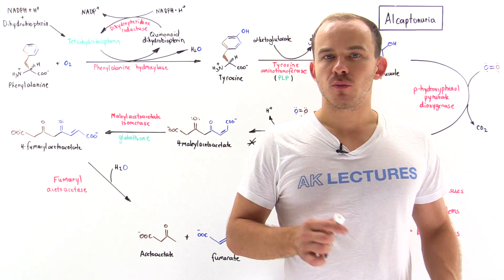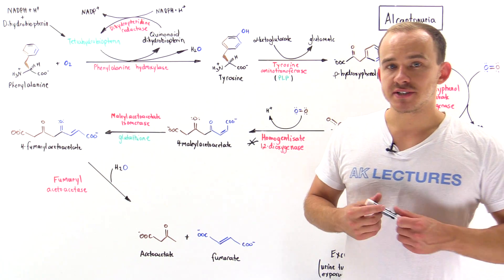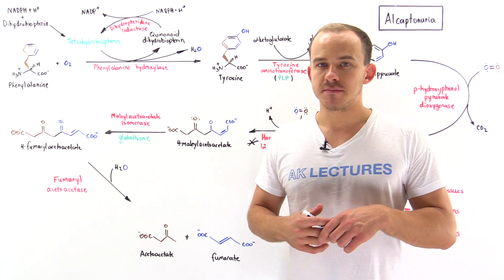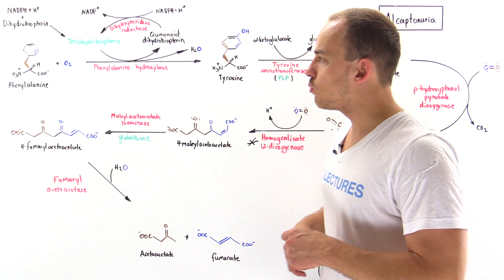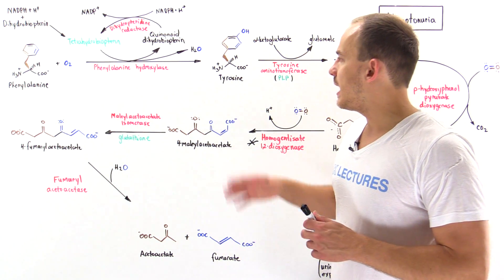Alcaptanuria is an autosomal recessive disease in which there is a defect in one of the enzymes involved in the metabolic pathways of phenylalanine and tyrosine.